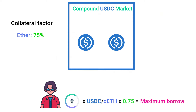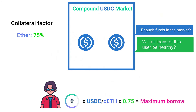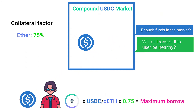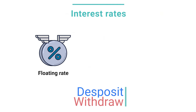The collateral factor can be different for each asset. There are also other factors that could affect how much you can borrow, such as available liquidity in the USDC market and the health of your previous unpaid borrowings. Once you successfully borrow USDC, the interest will start accumulating with each Ethereum block — about every 13 seconds. The interest rates within the Compound protocol are floating, meaning the rate changes based on market conditions — more specifically, anytime assets are added or removed from Compound's USDC market.